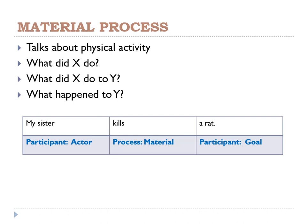For example: my sister kills a rat. My sister is the one who does the action, so she is called the actor. The rat is the object — something that is being given an activity — so the rat is a goal. My sister is the doer, the actor. Kills is the process, material. And the rat is the done-to, so it is a goal.